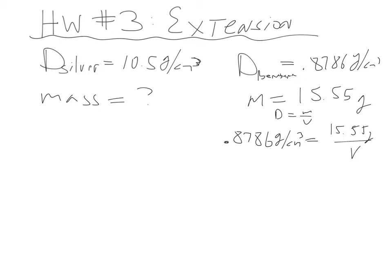So to get that variable out of there, we have to multiply both sides of the equation by this variable. So whatever I do to one side, I have to do to the other. V over V, V divided by V is 1, so they cancel out. That leaves me with my 15.55 grams. And then this becomes a more regular algebraic equation, because now 0.8786 grams per cubic centimeter times V is my coefficient times V, my variable. To get rid of that coefficient, it's multiplying, so the inverse is to divide.